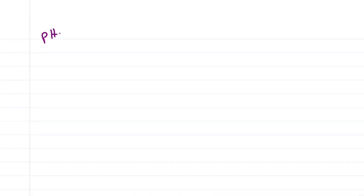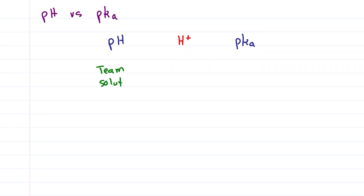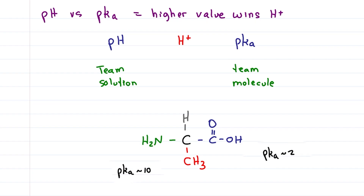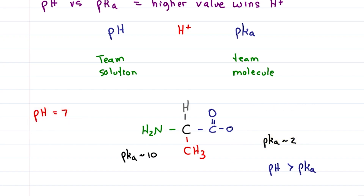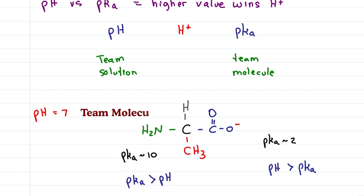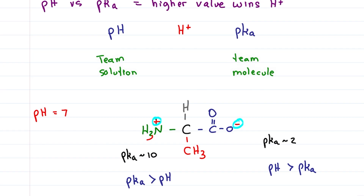How did we know? As I teach in my Zwitterion video, the pH and pKa are fighting for a proton. pH refers to the solution — team solution — pKa refers to the side chain on the molecule — team molecule — where the higher value wins the proton. At pH 7, because the pH is greater than the pKa, team solution wins a proton and pulls it off the molecule, deprotonating the carboxy to give an O-minus for a charge of negative 1. Also at pH 7, the pKa is greater than the pH, so the pKa wins a proton for team molecule, protonating the amine and giving a charge of plus 1. Plus 1 and minus 1 gives a net charge of 0, despite having two charges on the molecule. This is the Zwitterion.